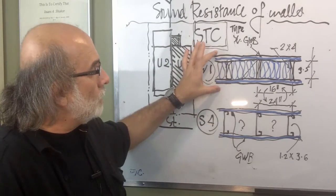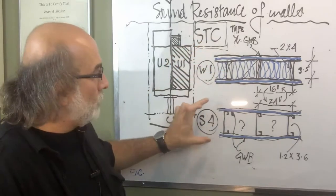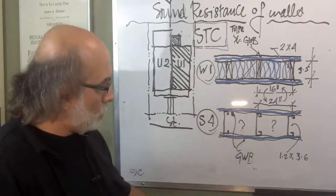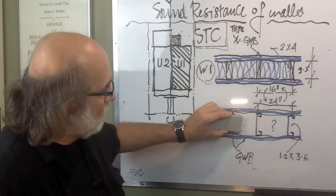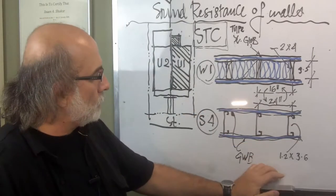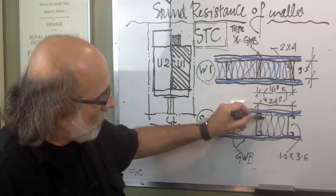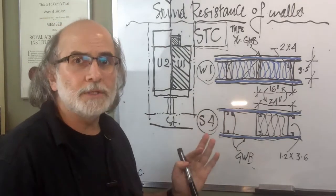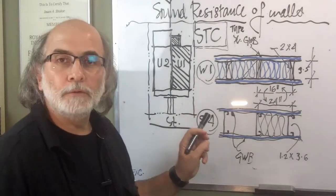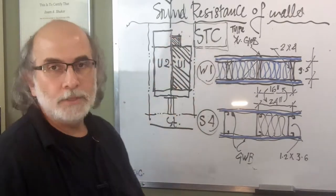Now, this one reaches 36 STC, while this one with or without this absorptive material, let's assume that it exists in one and it doesn't exist in the other, it's the same. It's about 48 to 52 STC.